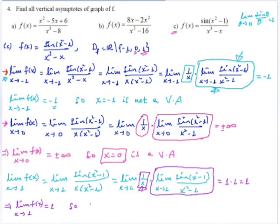Therefore, x equals 0 is the only vertical asymptote of this function. The function in part c has only x equals 0 as its vertical asymptote.